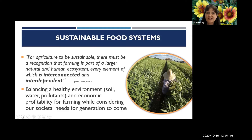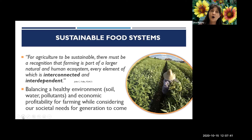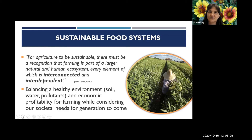Bringing that broad definition down to what it really means: we're trying to balance a healthy environment — what we're doing with soils, water, and pollutants — with the economy, making sure it's still profitable for farmers, and meeting society's needs for generations to come. Sustainability isn't just about today; it's about how we impact our future generations — our grandchildren's children. What we are doing today and our efforts also impact them.